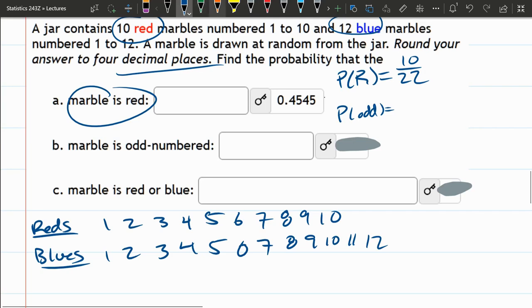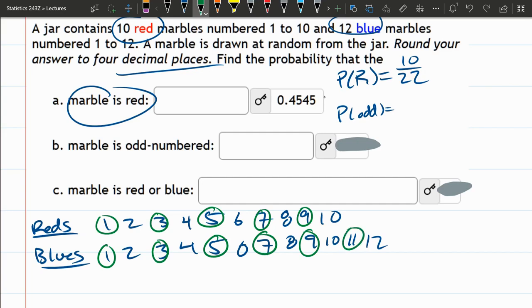I'm going to now use green, so I want all the odds. 1, 2, 3, 4, 5, 6, 7, 8, 9, 10, 11. So there's 11 odds total, same 22 marbles.